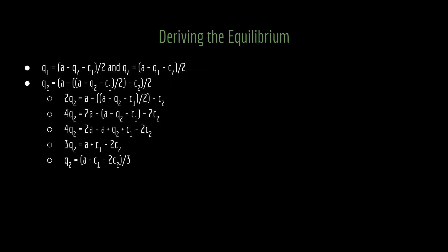It's the same procedure for firm two. All we're doing now is flip-flopping the ones and twos in the subscripts. When you do that, we get q2 equals (a + c1 - 2c2) divided by 3.